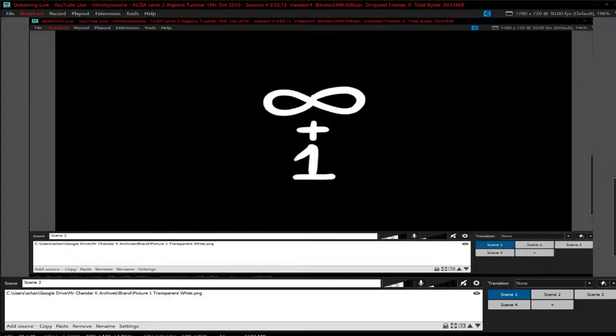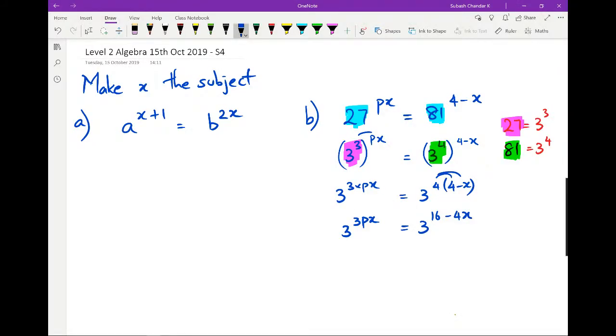We're really having fun now with this. So once you do that, our next thing, I just realized what's happening here. So what we then have is, because we've got two bases that are the same, we can actually get rid of it. So we can get rid of the two 3s and we can rewrite this as 3px equals 16 minus 4x.